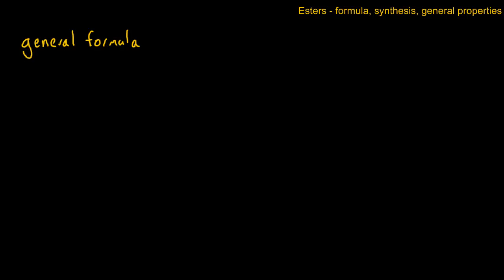The general formula has two basic groups: R-C with a double bond to oxygen, and then through another oxygen to R1. The synthesis is from an alkenoic acid and an alcohol. This group here comes from an alkenoic acid, and the other group comes from an alcohol.